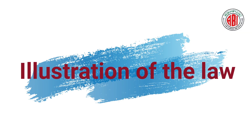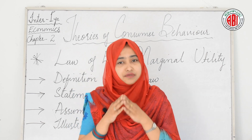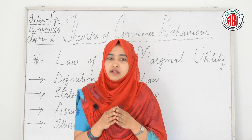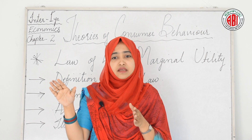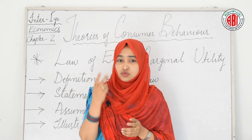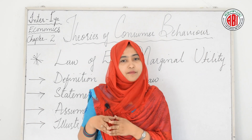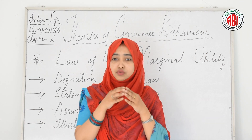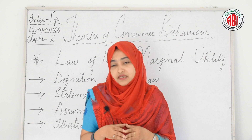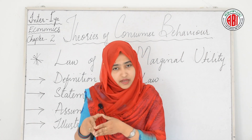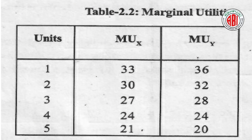Elucidation of the law with a numerical example: Suppose a consumer is prepared to spend his entire money income of rupees 20 on two goods — X and Y. The market price of the two goods are rupees 3 and rupees 4 respectively. The marginal utilities of goods X and Y are shown in the table with columns for units, MUX, and MUY.